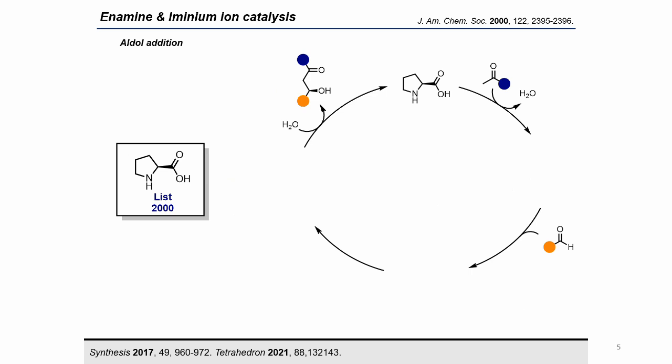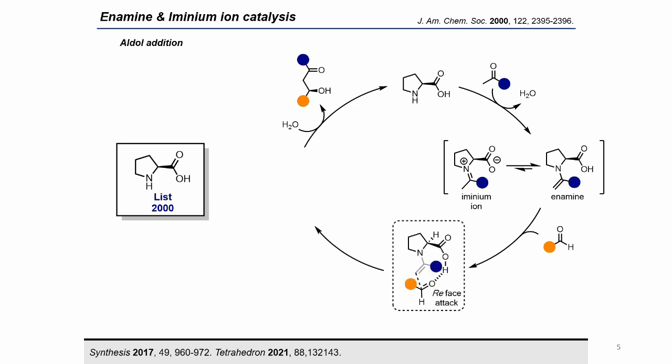One of the common aspects of this type of catalyst is the initial condensation of chiral secondary amines with a carbonyl group. In this case, the reaction of proline with a ketone forms a chiral enamine. Next, the carboxylic acid of proline activates a non-enolizable aldehyde through hydrogen bonding, favoring the re-face attack of the enamine to the aldehyde. The subsequent hydrolysis of the aldol product releases the product and regenerates the catalyst.